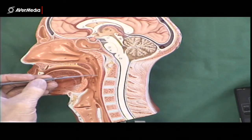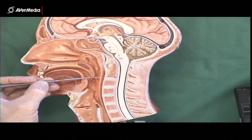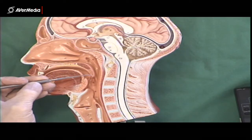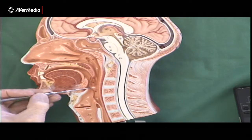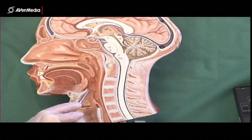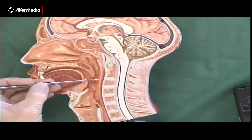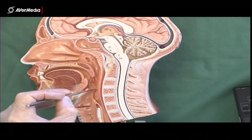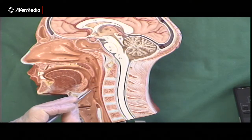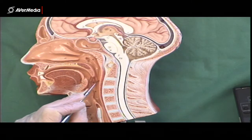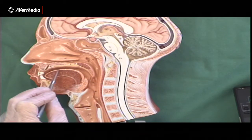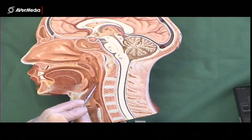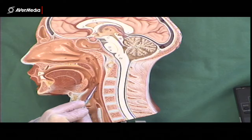Inferior to the nasopharynx, from the tip of the uvula — the end of the soft palate — down to the superior tip of the epiglottis, just this region in here is the oropharynx. It's the part of the pharynx that's behind the oral cavity, so this is the oropharynx.